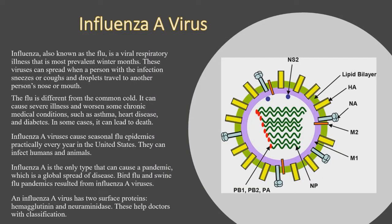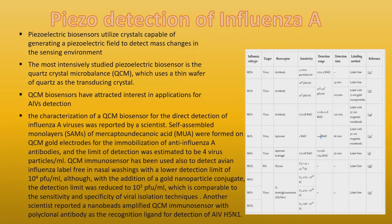Influenza A virus causes influenza in birds and some mammals and is the only species of the genus Alphainfluenzavirus. Influenza A viruses have been isolated from wild birds, although disease is uncommon. Some isolates cause severe disease in domestic poultry and rarely in humans. Occasionally these viruses are transmitted from wild aquatic birds to domestic poultry, which may cause an outbreak or give rise to human influenza pandemics. Current methods for diagnosis require specialized laboratory facilities and highly trained personnel, and viral culture can take up to 14 days to obtain a definitive result.